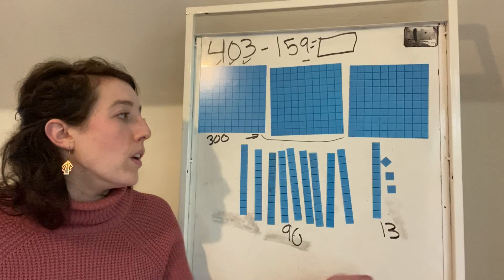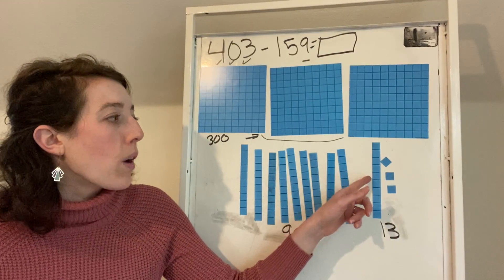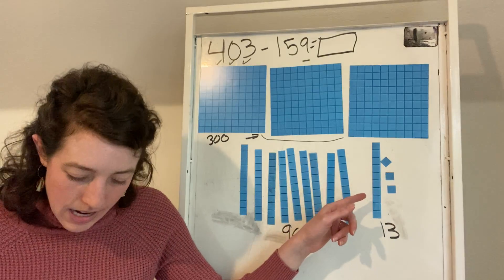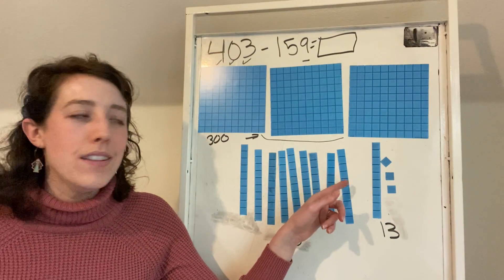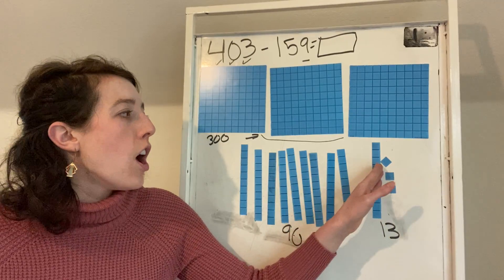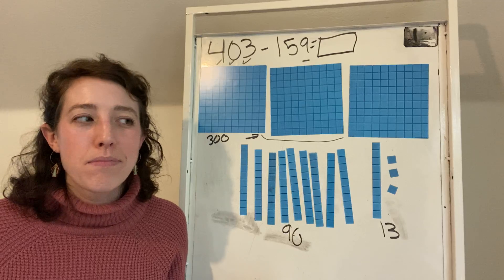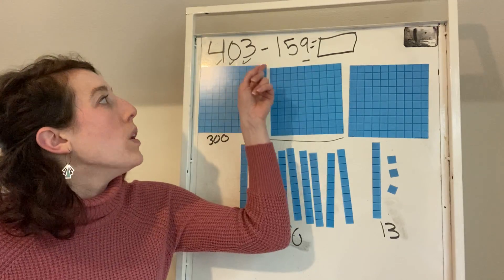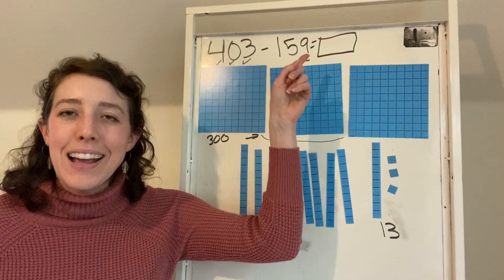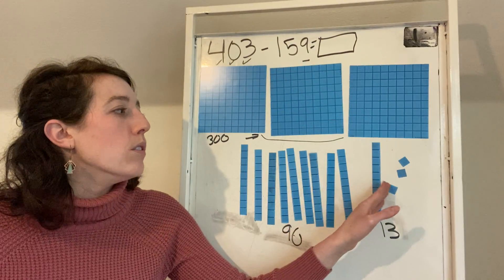So what I could do if I wanted to is I could get out my ones and I could break up my 10 into 10 ones. But I can also keep it just like this to show that all together I have 13. So remember, what do we have to subtract next? Nine ones. So go ahead and count with me.